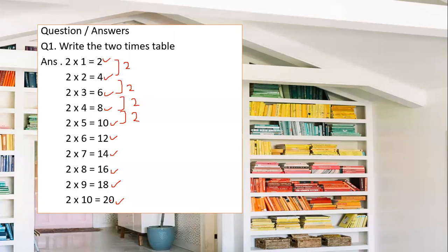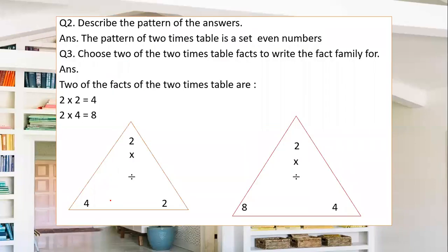The next question says: describe the pattern of the answers. You have written the table of 2 — see the answers and describe the pattern. The pattern of the 2 times table is a set of even numbers: 2, 4, 6, 8, 10, 12, 14, 16, 18, and 20. All of these are even numbers and they are easily divided by 2.